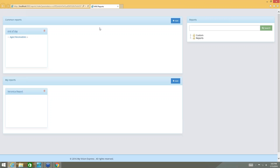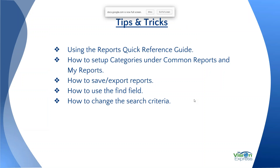So what I'm going to go over today: we're going to go over using the Reports Portal. There's a Quick Reference Guide if you are not using it yet — I'm going to show you how to use that and where to find it. I'm going to go over how to set up categories under the Common Reports and the My Reports section inside of the portal. We'll also go over how to save and export your reports, how to use the Find a Field feature, and how to change the search criteria once you've generated a report.